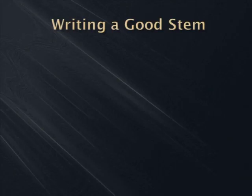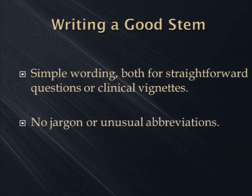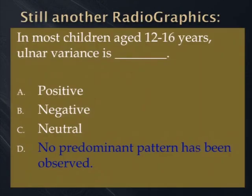Simple wording for everything — simple declarative sentences are the way to go. Don't use abbreviations or jargon peculiar to your institution, like 'the patient was bolused with roids.' You want to make sure that the stem and all the choices have matching grammar. If not, you're giving a clue. Here's a real-life example: 'In most children aged 12 to 16 years, ulnar variance is positive, negative, neutral.' Then option D says 'no predominant pattern has been observed' — it doesn't fit grammatically. Whether it's right or wrong, a test taker would reject it out of hand.